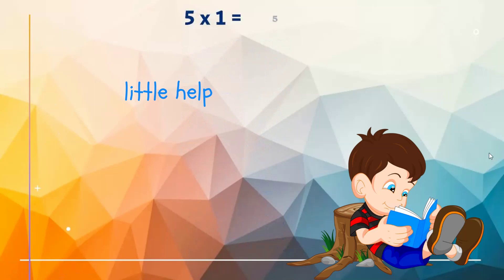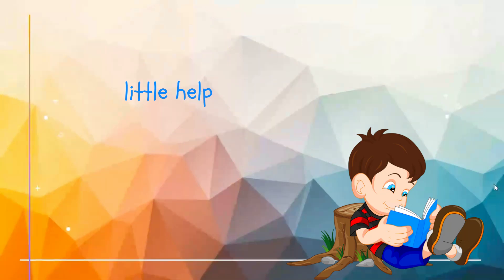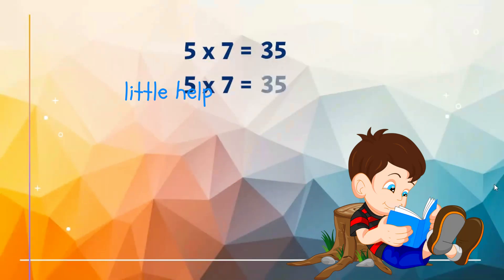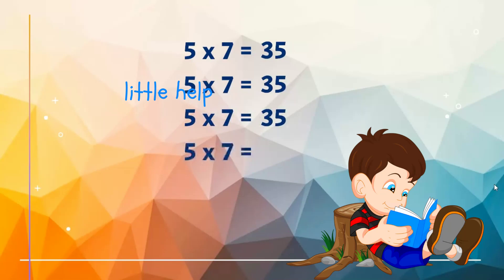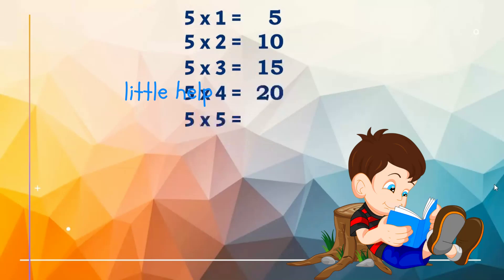Five ones are five, five twos are ten, five threes are fifteen, five fours are twenty, five fives are twenty-five, five sixes are thirty. Five sevens are thirty-five.